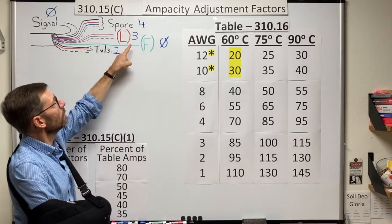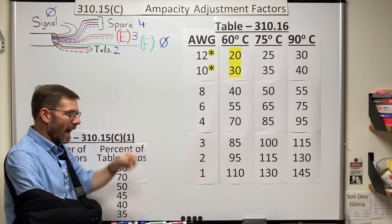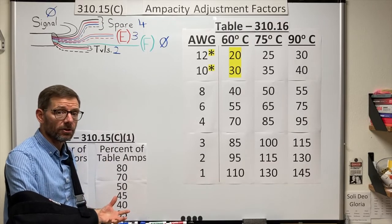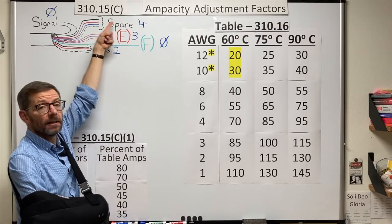So here I have two, three, four. Add up to nine current carrying conductors as calculated in this section.